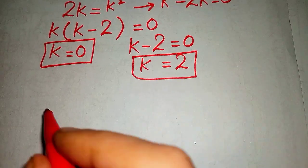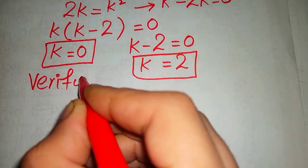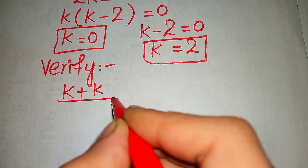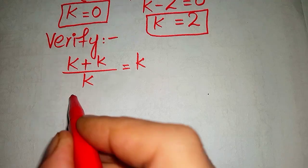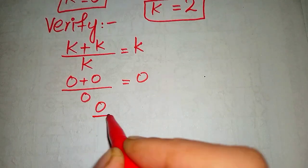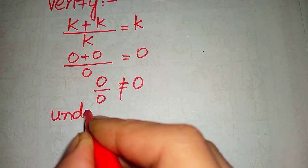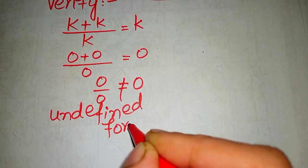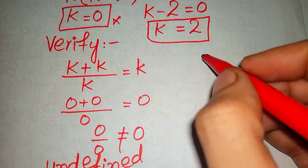Now we have to verify whether both these values satisfy our given equation k plus k over k equals k. First, we put k equals 0 into our equation. This gives an undefined form, so k equals 0 is not a valid solution.